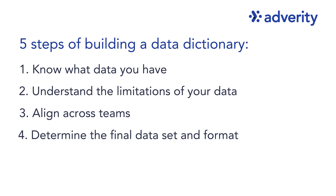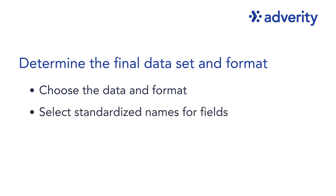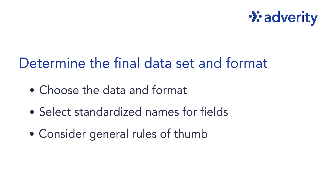Once you've figured that out, you'll need to define the data you want to include in your final data set and decide on the desired format. It's important to avoid getting caught up in semantic debates. Instead, focus on selecting standardised names for fields that will make sense to any team at any stage, from data engineers to marketing and agency teams. It's also useful to consider general rules of thumb, for example replacing spaces with underscores or using camel case for multi-word fields. Ironing out these rules at the beginning can save you a lot of time and hassle down the line, helping you mitigate the risk of having multiple values for the same field within your data set.